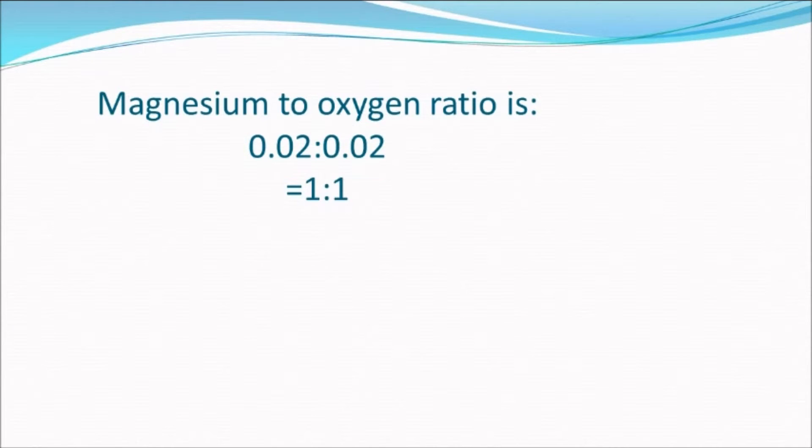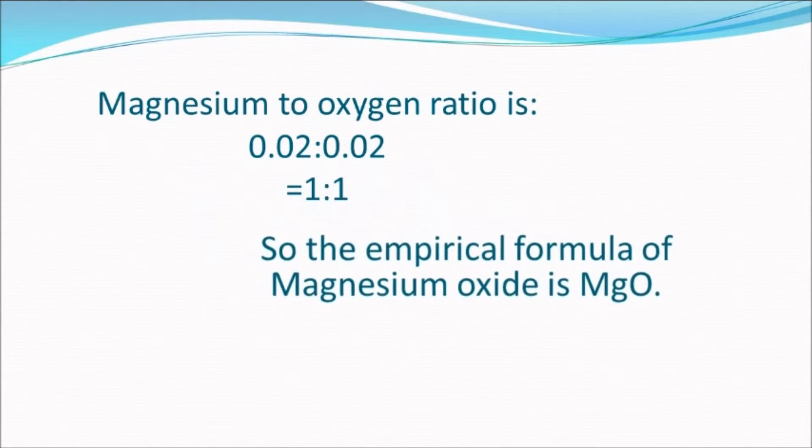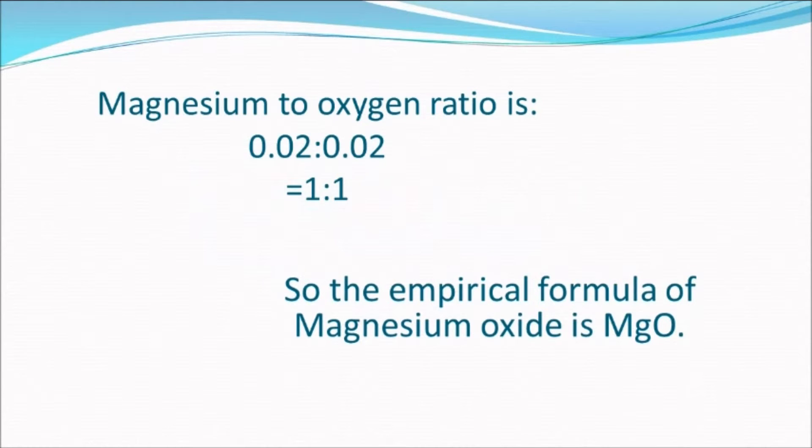Therefore 1:1, which means that the empirical formula of magnesium oxide is MgO.